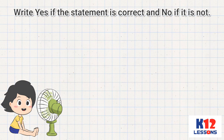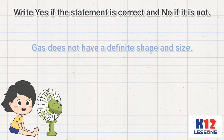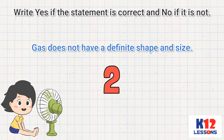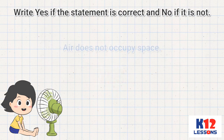Write yes if the statement is correct and no if it is not. Gas does not have a definite shape and size. Air does not occupy space.